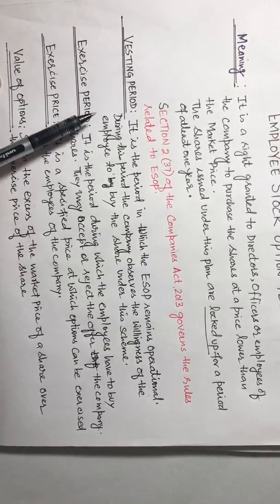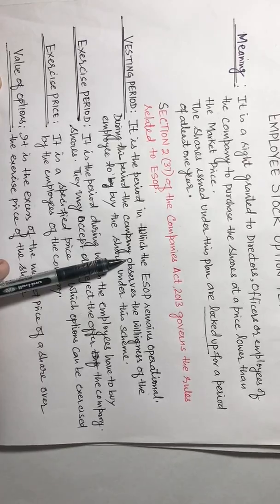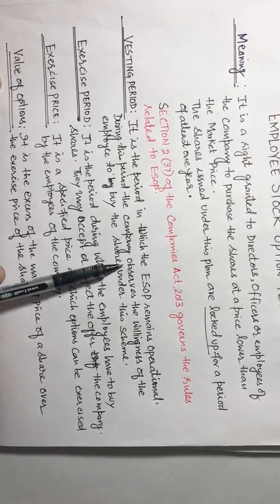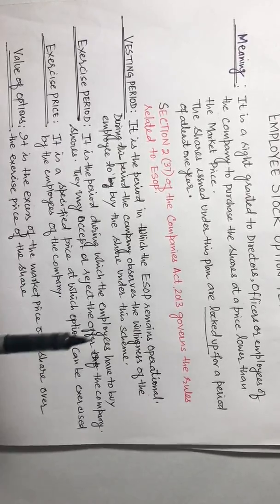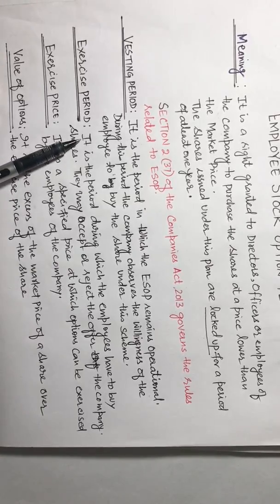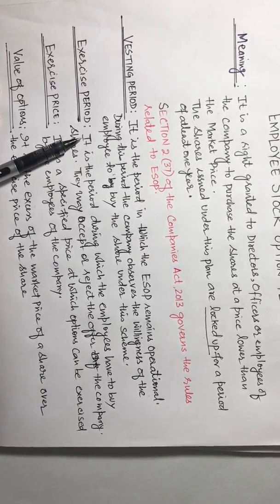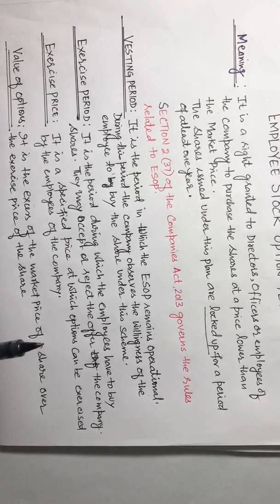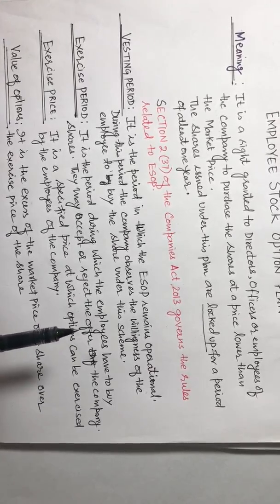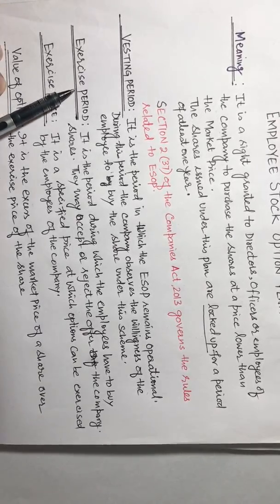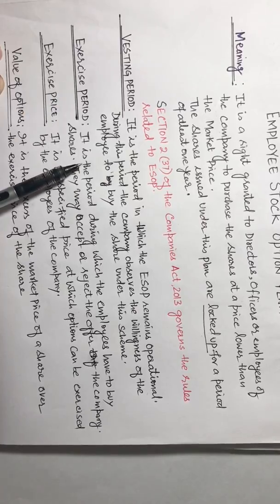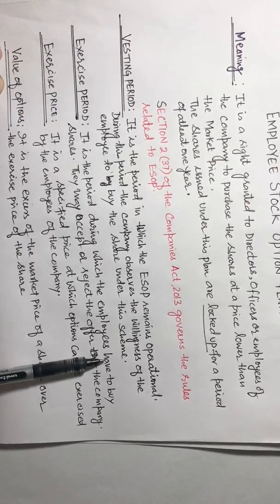Next is exercise period. After the completion of vesting period, if the company has given one year vesting period to make up your mind, after that the company gives another year within which time you can apply for the share and you can buy the shares. That period is known as exercise period. It is the period during which employees have to buy the shares.